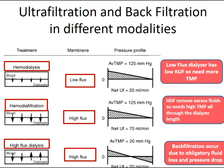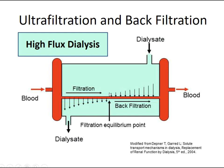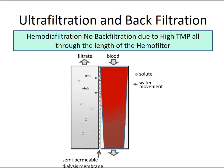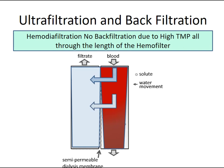Back-filtration occurs only in high flux dialysis, due to obligatory fluid loss and pressure drop. In the middle of the dialyzer there is a filtration equilibrium point: filtration happens in the first part from the blood side toward the dialyzer side, and subsequently a pressure drop — with higher pressure in the dialyzer — causes back-filtration. In hemodiafiltration, no back-filtration occurs due to high transmembrane pressure throughout the entire length of the hemofilter, so water moves from almost the whole length of the dialyzer.